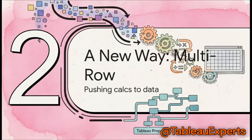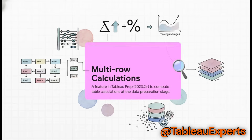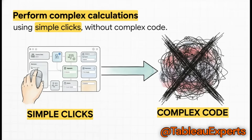But what if we could flip that on its head? What if we could do all that heavy lifting before the data even gets near the dashboard? That's exactly where this new approach in Tableau Prep comes into play. Meet multi-row calculations. This feature, introduced in Tableau Prep version 2023.2 and later, lets you handle things like moving averages or percent differences directly in your prep flow. You're not just writing a formula — you are physically baking the result right into your data itself. It's all through a super simple visual interface. Tableau has taken these really complex window-based calculations and made them accessible with just a few clicks. You don't have to be a coding wizard.